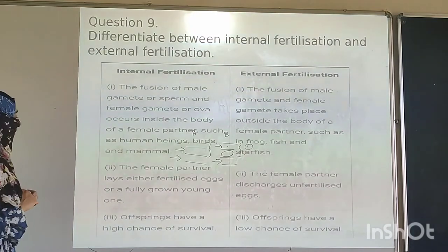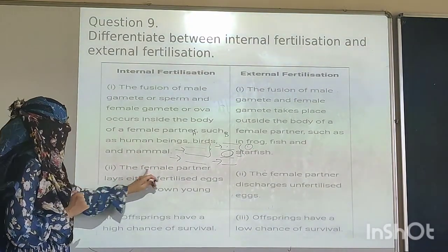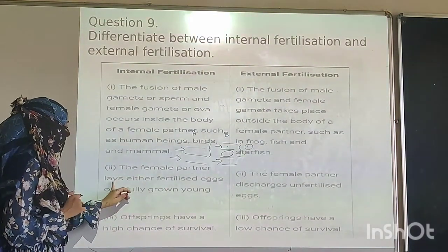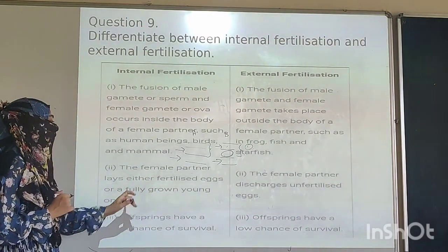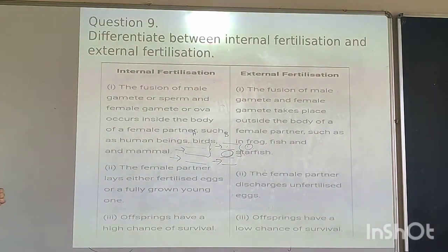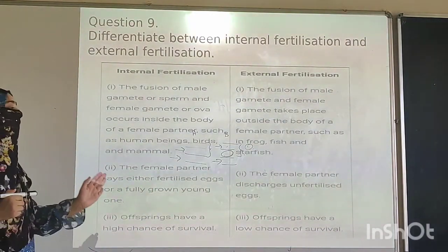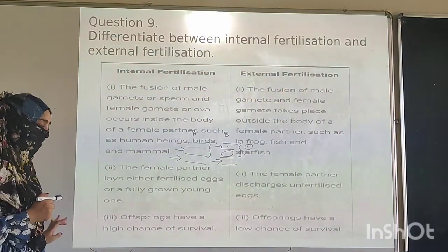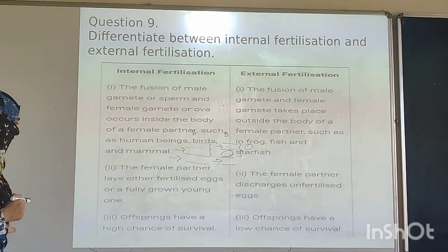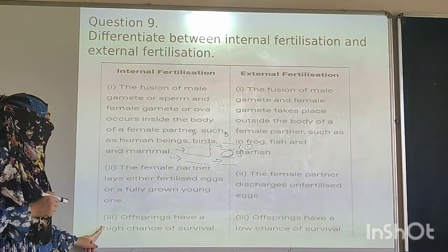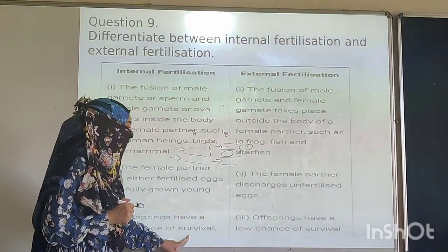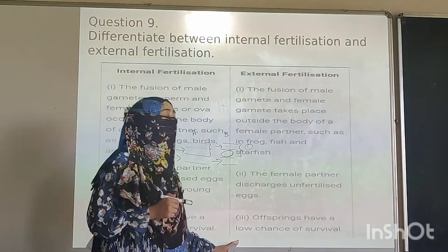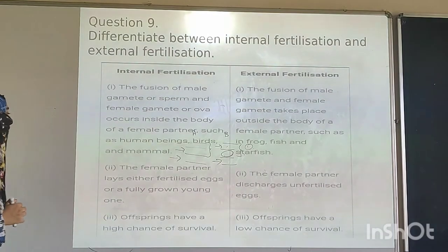Another difference: in internal fertilization the female partner gives birth to either fertilized eggs or a fully grown young one, whereas in external fertilization the discharge is unfertilized eggs. Also, there are high chances of survival in internal fertilization, whereas there are lower chances of survival in external fertilization.